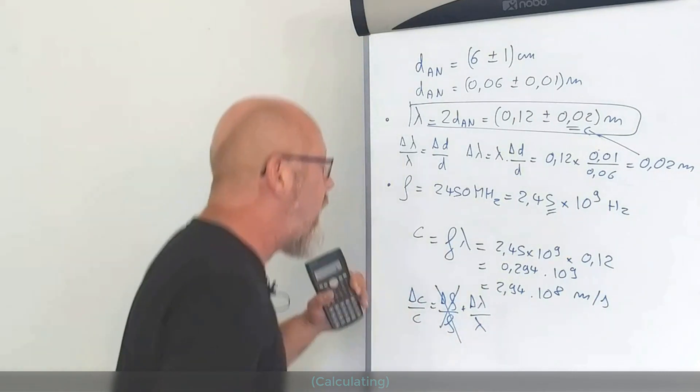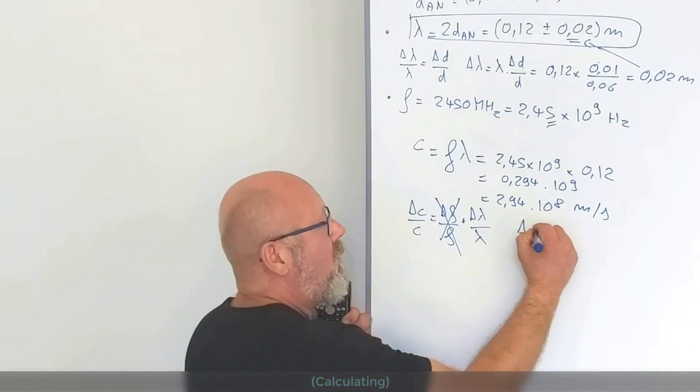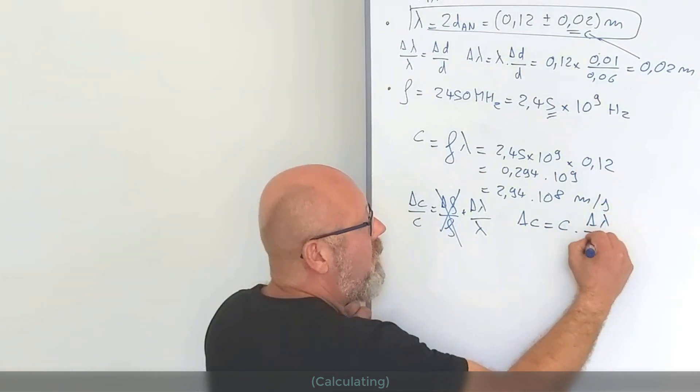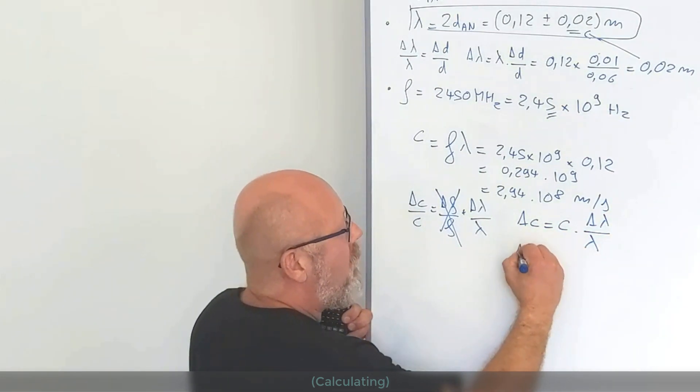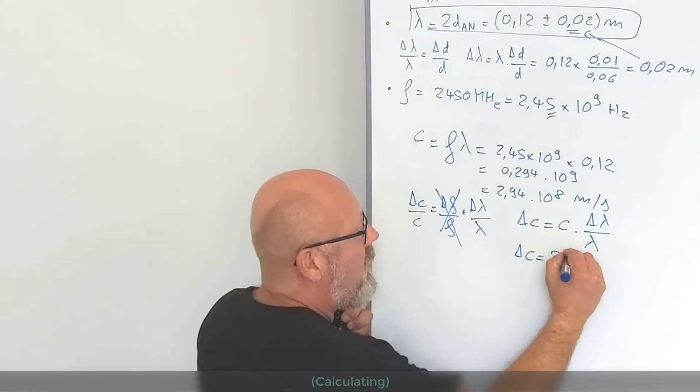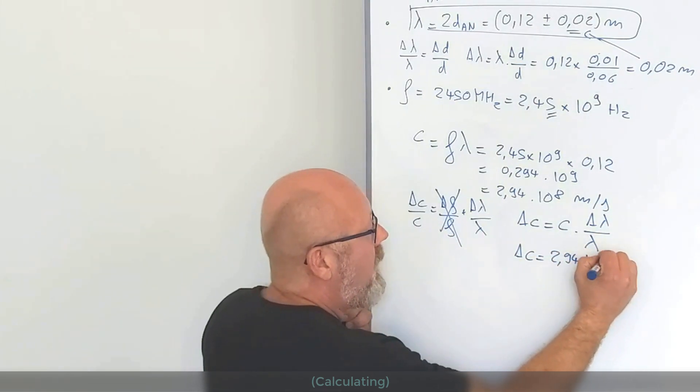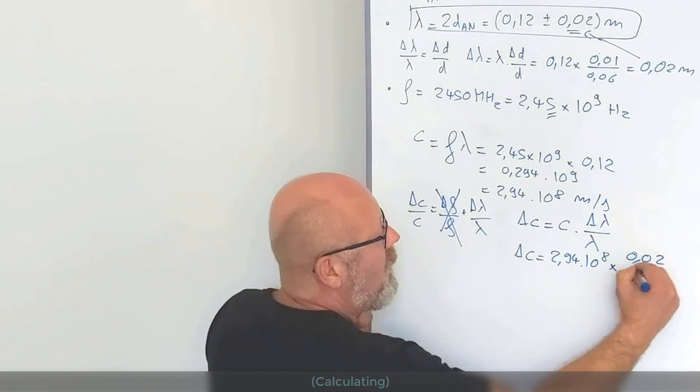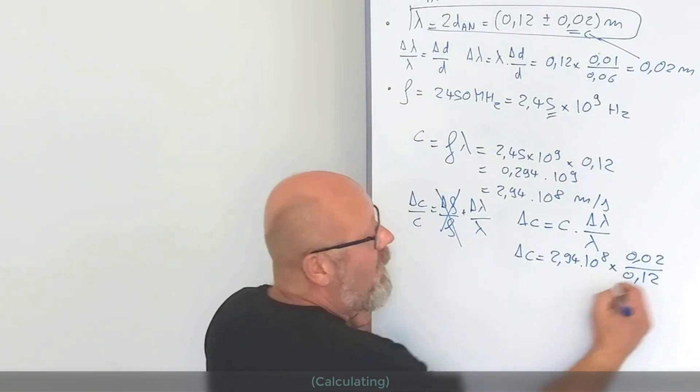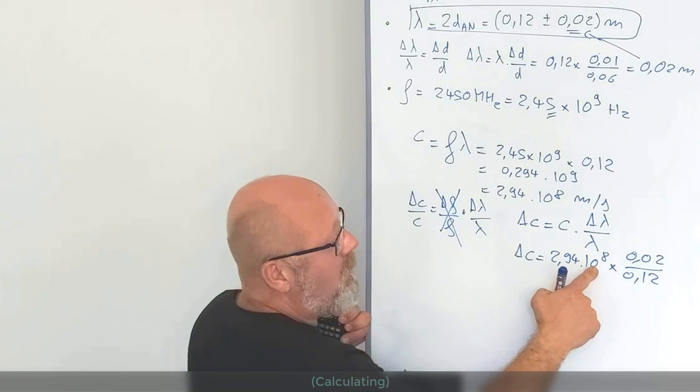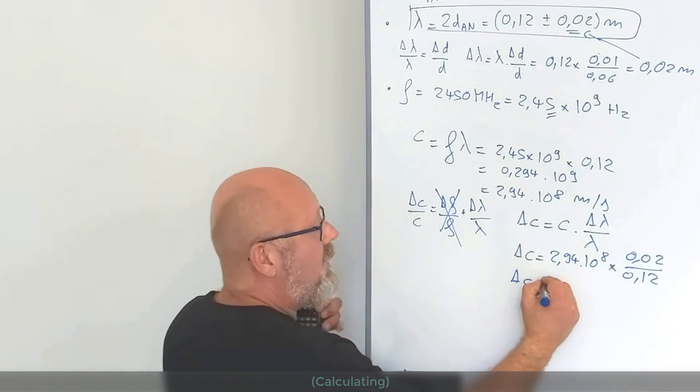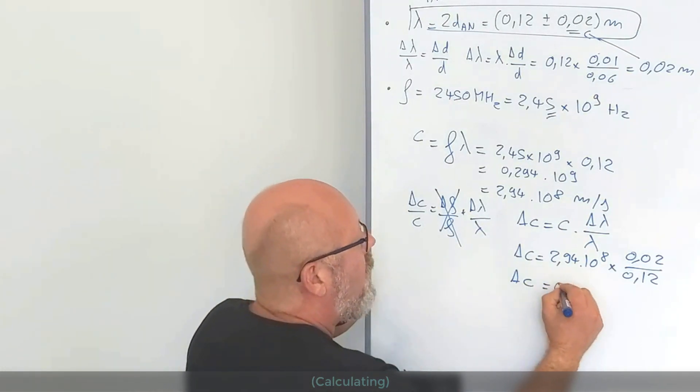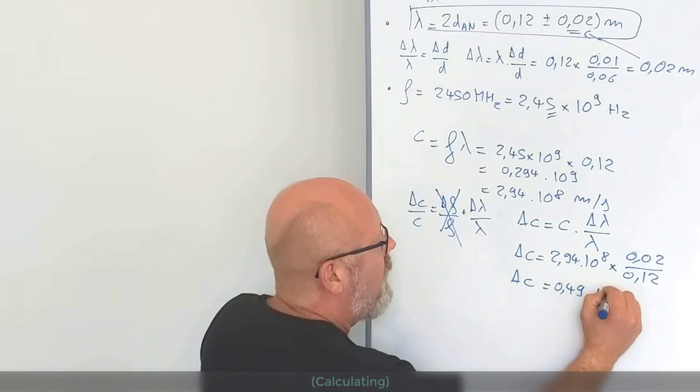So, then by rearranging this equation, I can just find the error on the speed of light. Which is c by delta lambda over lambda. If I plug in the numbers, I get delta c equals 2.94 by 10 to the 8 multiplied by 0.02 divided by 0.12. So, basically, this is dividing this number by 6. So, delta c equals 2.94 divided by 6, 0.49 by 10 to the 8.